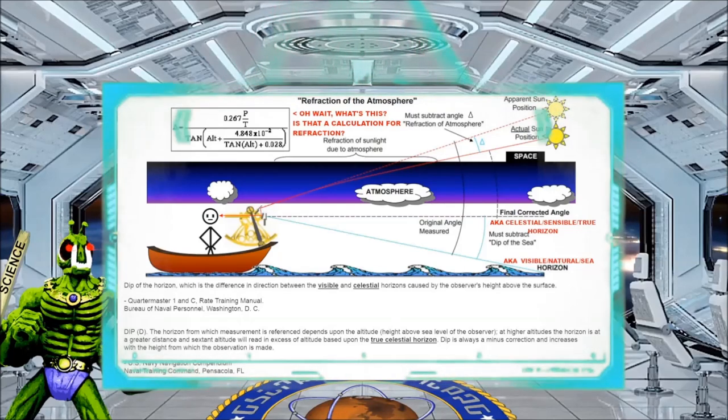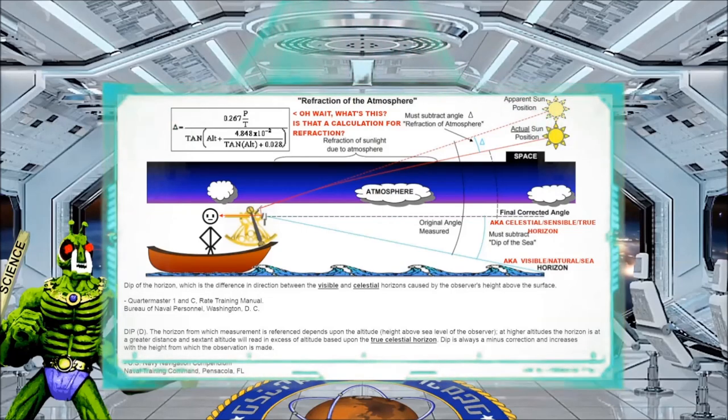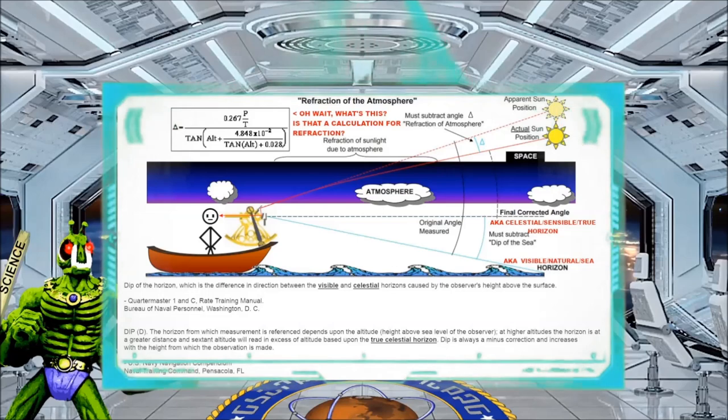Now to put this simply, you use a celestial, sensible, true horizon, something that is always 90 degrees from zenith in all directions from the point and elevation of the observer. However, this is exactly what makes the use of a sextant possible on an aircraft.